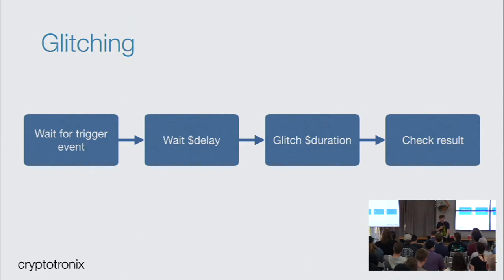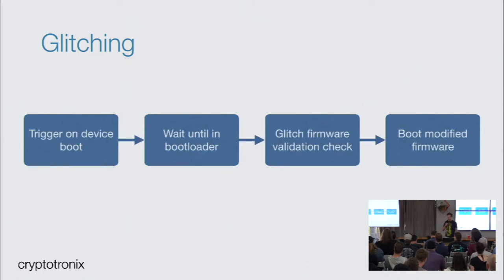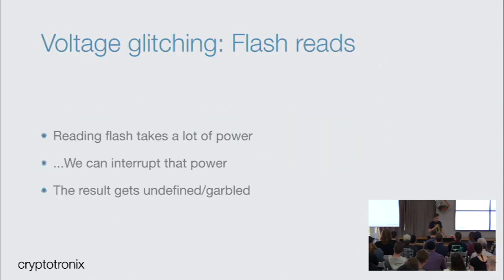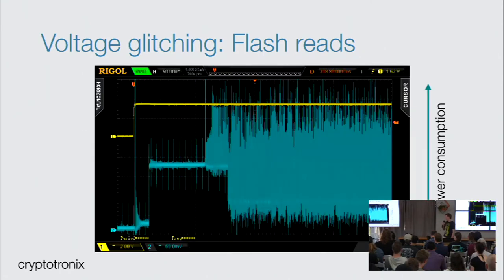The basic theory in glitching is that you wait for a trigger event, then wait for a certain delay, glitch for a certain duration, then check for a result. On a real device this might be: I'm booting, I'm waiting until I'm in the bootloader, then I wait for the precise moment where the bootloader checks whether the firmware is valid, then I drop the power for a very short amount of time and try to boot my modified firmware. Flash reads take a lot of power, so if a system boots and tries to read a variable from flash and you interrupt the power, the result gets undefined.